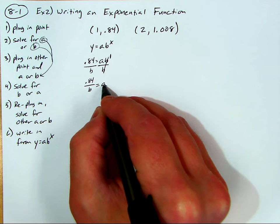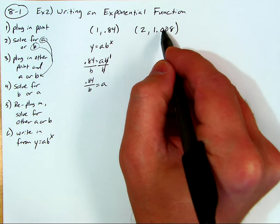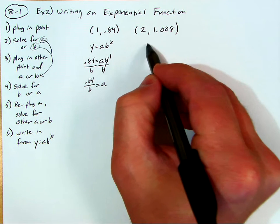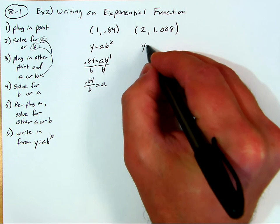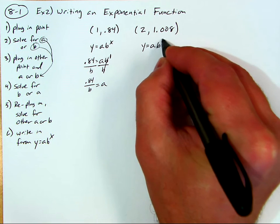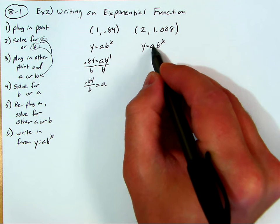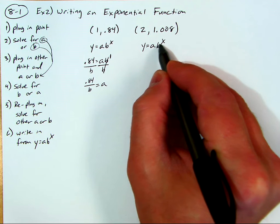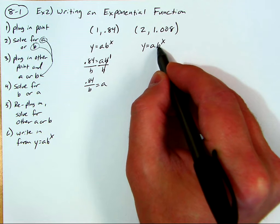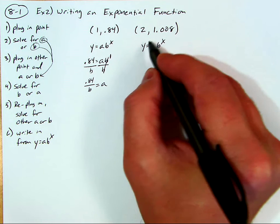Now I have a, I have an x and a y on another point. I need to use the general form again over here. y equals a, b to the x. I have x and I have y and I have what a equals, I can plug that right here. I can use all these numbers to solve for b and find out finally what b is as a number. So let's go ahead and do that.